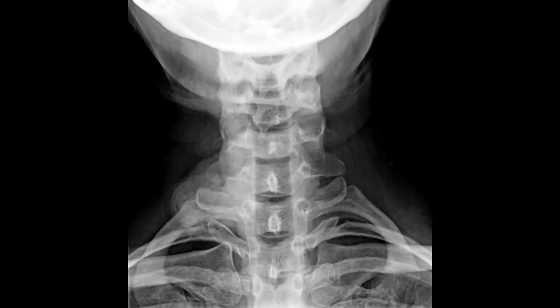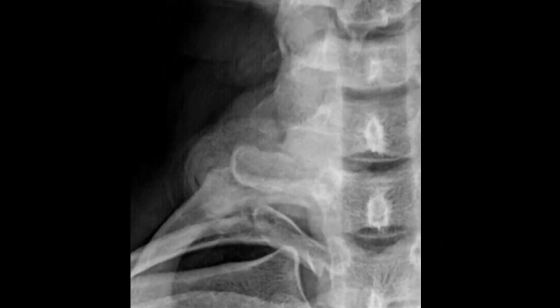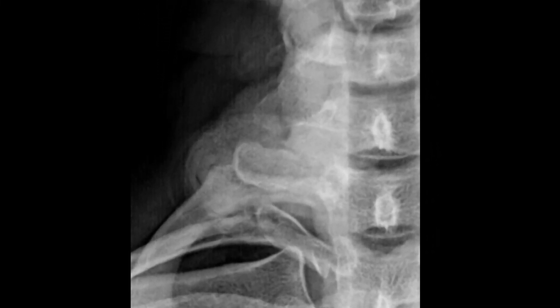Here is a frontal view of the cervical spine with an asymmetric density, and this is the ponytail laying over the patient's shoulder.